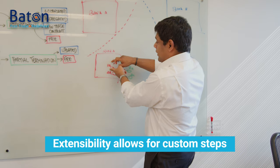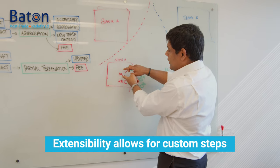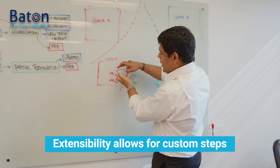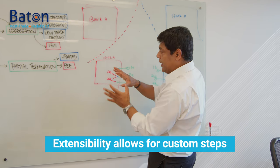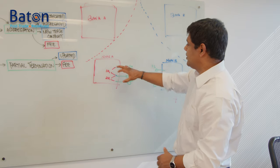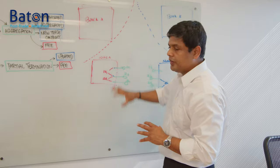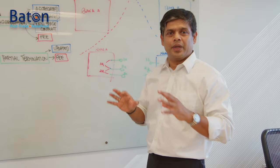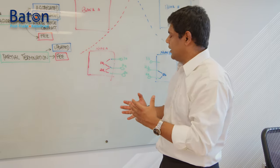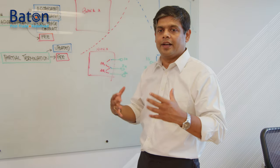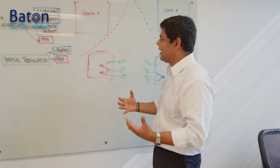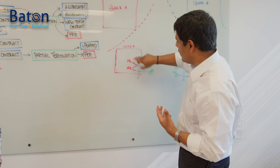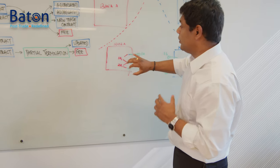Going back to the TurboTax analogy — that's not possible unless TurboTax launches a new version. This is where, when we designed the software at BATON, we needed to make sure that a bank would be able to extend the BATON software and add custom steps. That's the realm of extensibility. Extensibility is important because we cannot dictate a single language — this is where blockchains don't do a really good job. A smart contract has to be written in Solidity or a similar language, which does not lend itself well to the interoperability we need. You need something you can extend and interoperate with existing bank systems — and this is what BATON does.